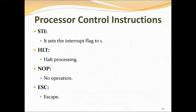Next is HLT (halt processing). This instruction stops program execution; the processor stops fetching and executing instructions and enters a halt state. It will exit the halt state only when one of the following occurs: an interrupt signal on the INTR line, an interrupt signal on the NMI line, or a reset signal on the reset input. Next is NOP (no operation). This instruction performs no operation; it takes three clock cycles and increments the instruction pointer to the next instruction. It can be used to produce a delay before executing certain instructions.